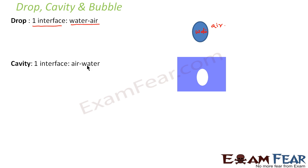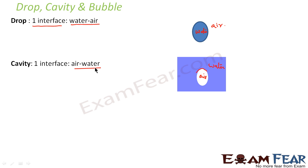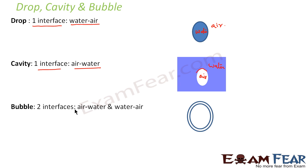A cavity is a spherical shaped air-filled space — it is just the reverse of a drop. In the surroundings you have water, and in the middle you have a cavity that is filled with air. So inside you have air and all around you have water. A cavity also has only one interface: the air-water interface separating the water from the air.